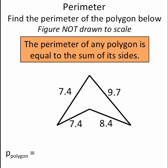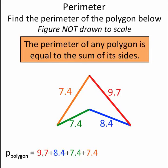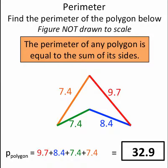So for this polygon, the perimeter is equal to 9.7 plus 8.4 plus 7.4 plus 7.4. Add all those together and I get 32.9. So the perimeter of this polygon is equal to 32.9.